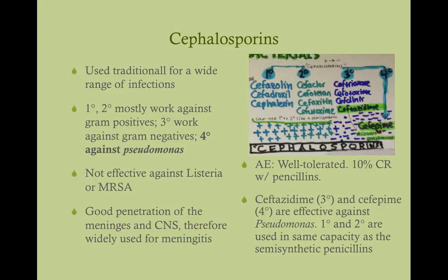The cephalosporins are similar to the penicillins in structure and are used traditionally for a wide range of infections. There are multiple generations — first, second, third, and fourth — which reflect efficacy against different bugs. First and second generation are more effective against gram-positives, and as you get toward the fourth generation, it's more effective against gram-negatives. None of these are effective against Listeria or MRSA. Uniquely, ceftazidime and cefepime are effective against Pseudomonas — that's very important to remember.